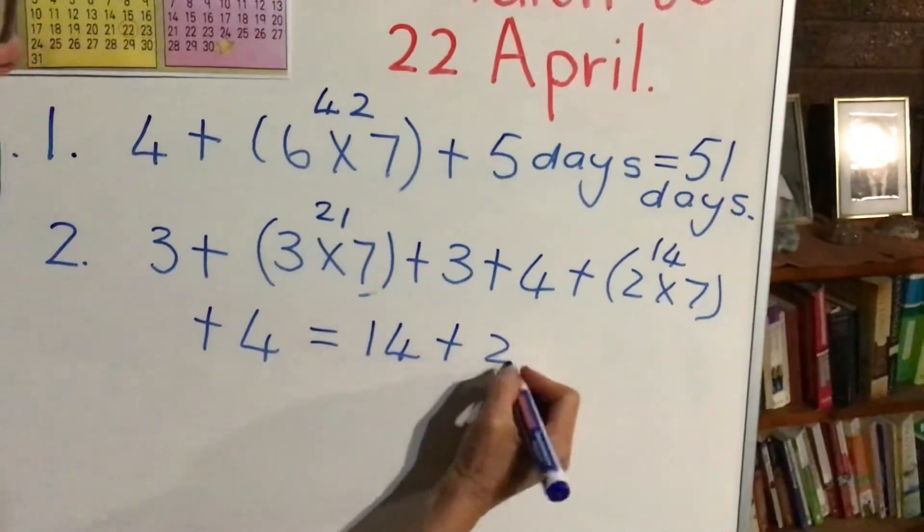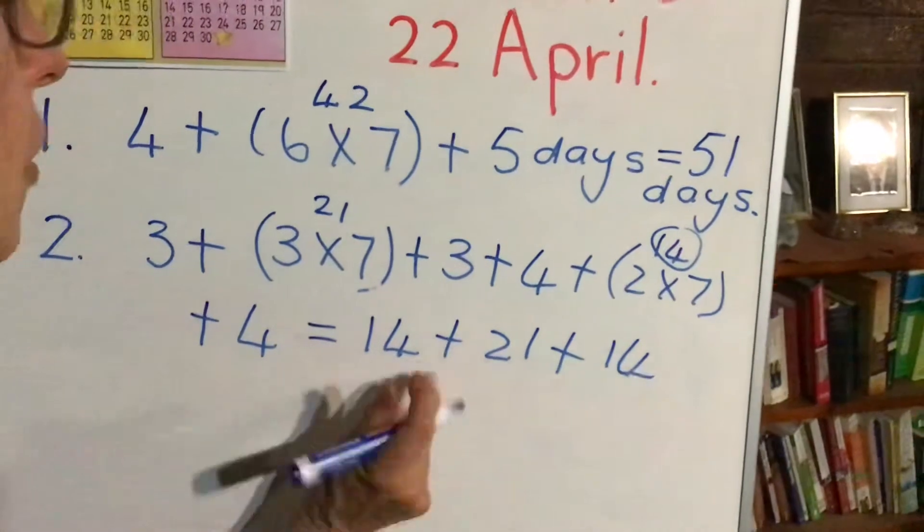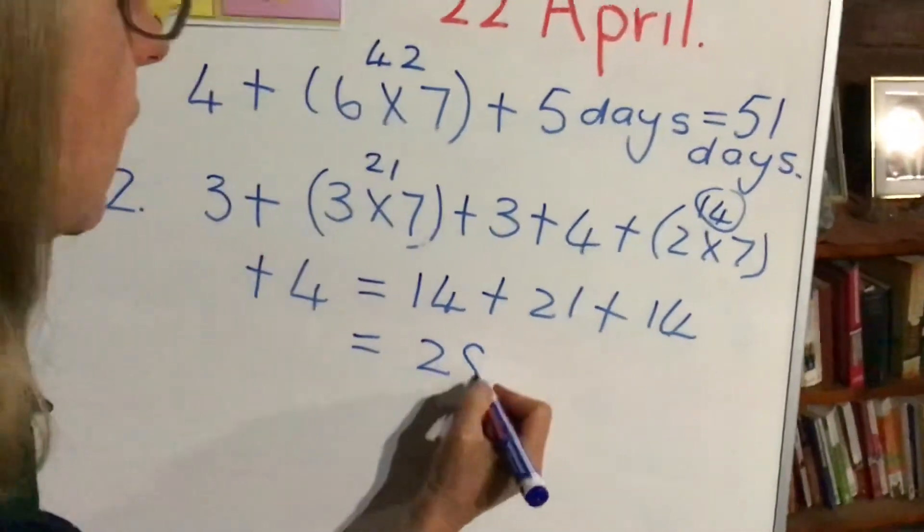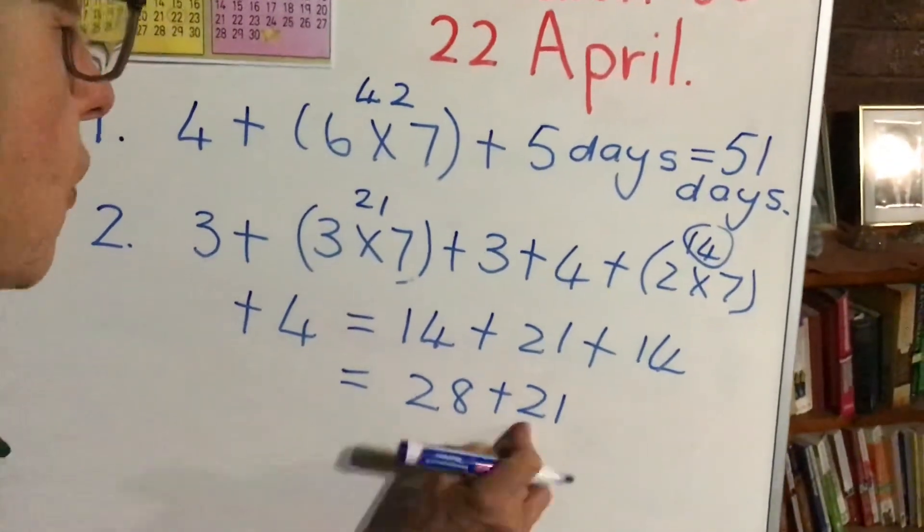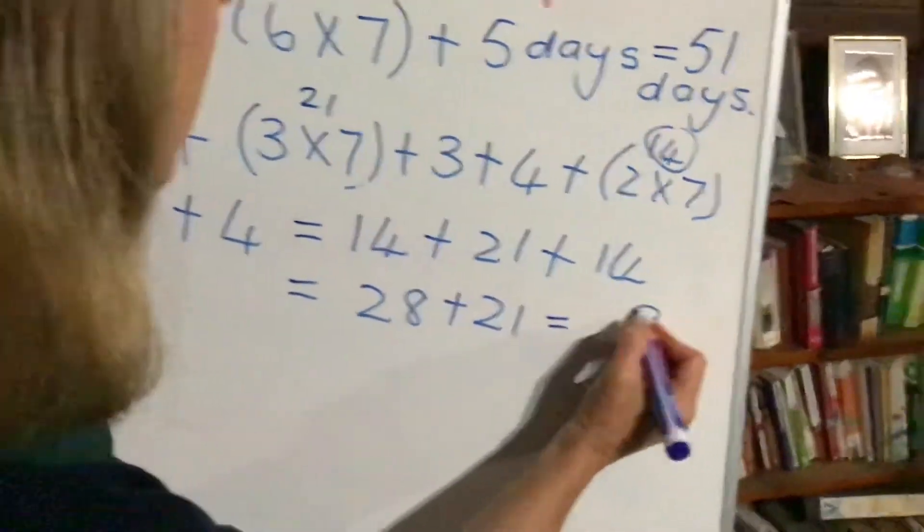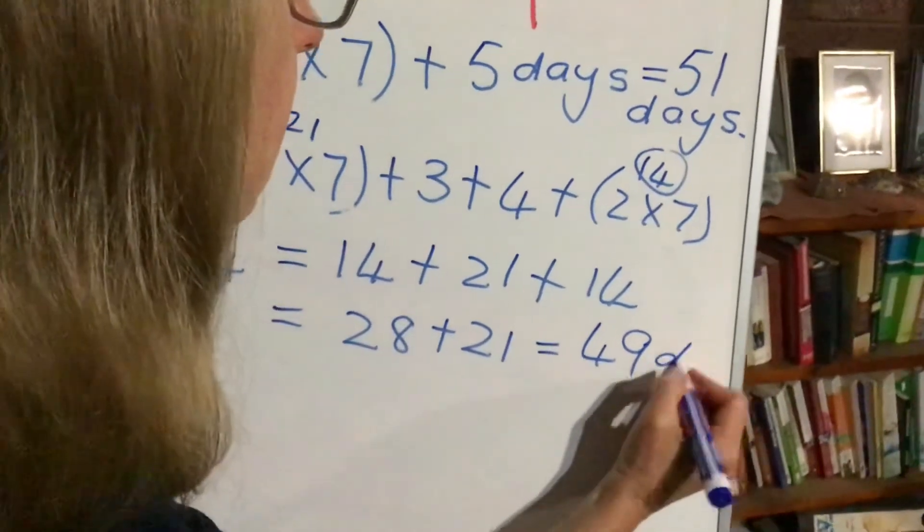So we've got 14 + 14 is 28, and then we're going to add on 21 here. 14, 9... 8 plus 1 is 9 units, 2 plus 2 plus 2 is 4. So there are 49 days.